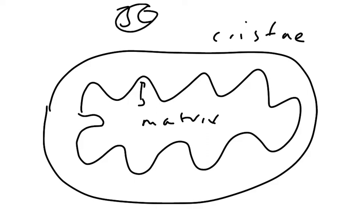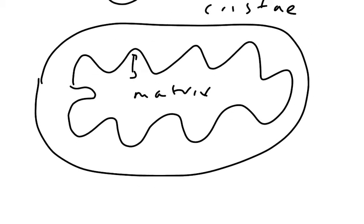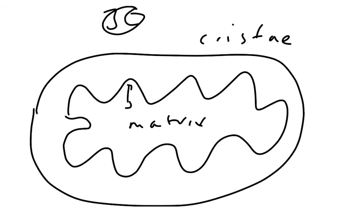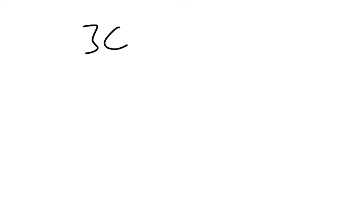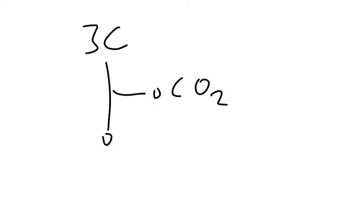Let's have a look at what happens to this pyruvate molecule. The pyruvate molecule is made in the cytoplasm and it goes into the mitochondrial matrix. The three-carbon pyruvate gets decarboxylated by a decarboxylase enzyme, which produces carbon dioxide. It's hugely important that you realise the oxygen here has nothing whatsoever to do with the oxygen you breathe in.